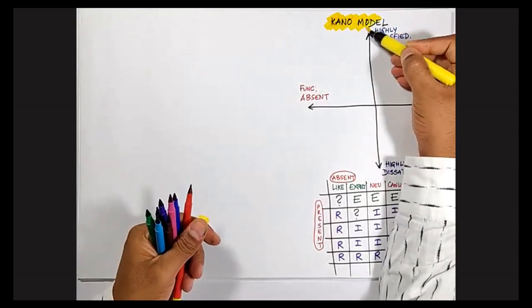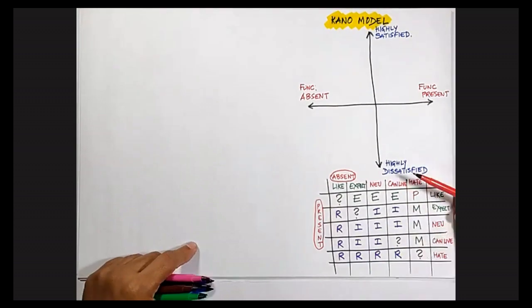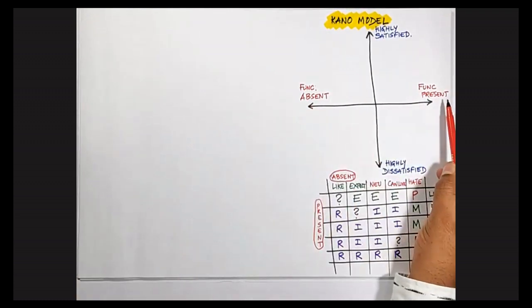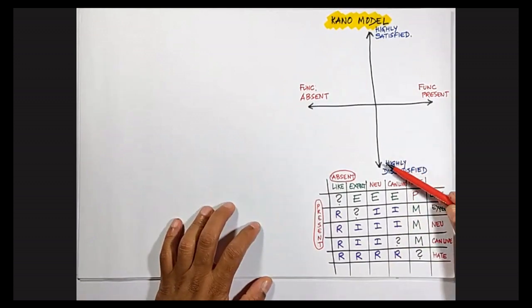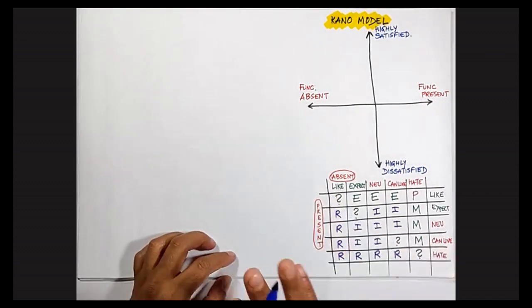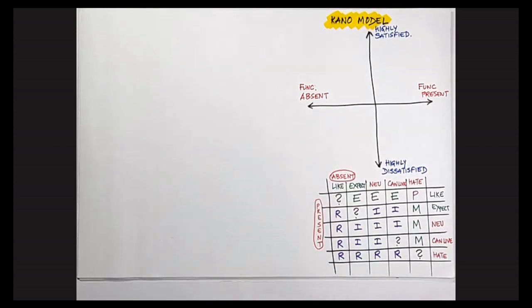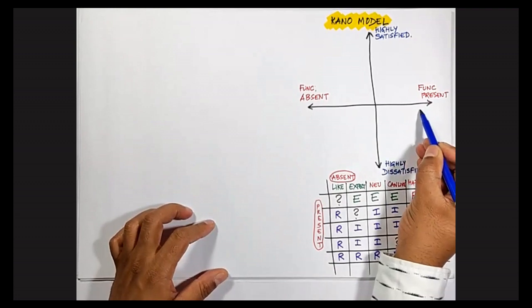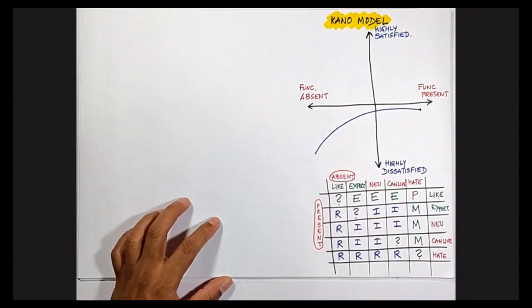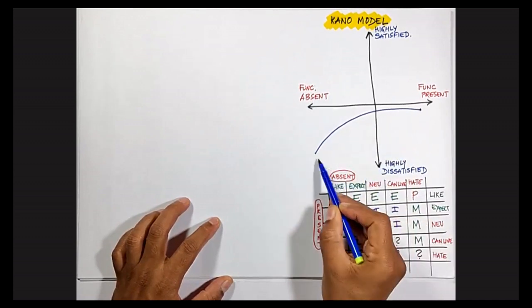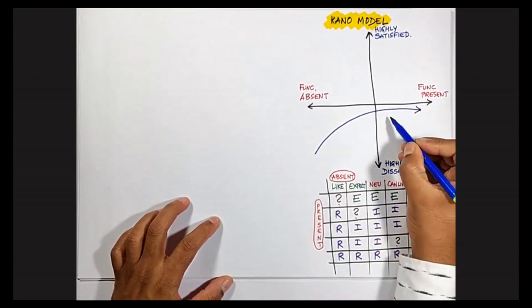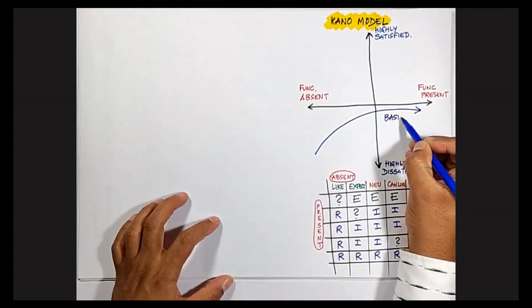This is called the Kano model. It talks about the satisfaction level of the customer — if a functionality is absent or present, what is the satisfaction level going to be? It could be highly dissatisfied or highly satisfied. If the functionality is present, customers are just neutral to it, but if it is absent, there is high dissatisfaction. This path is called basic functionalities or must-haves.